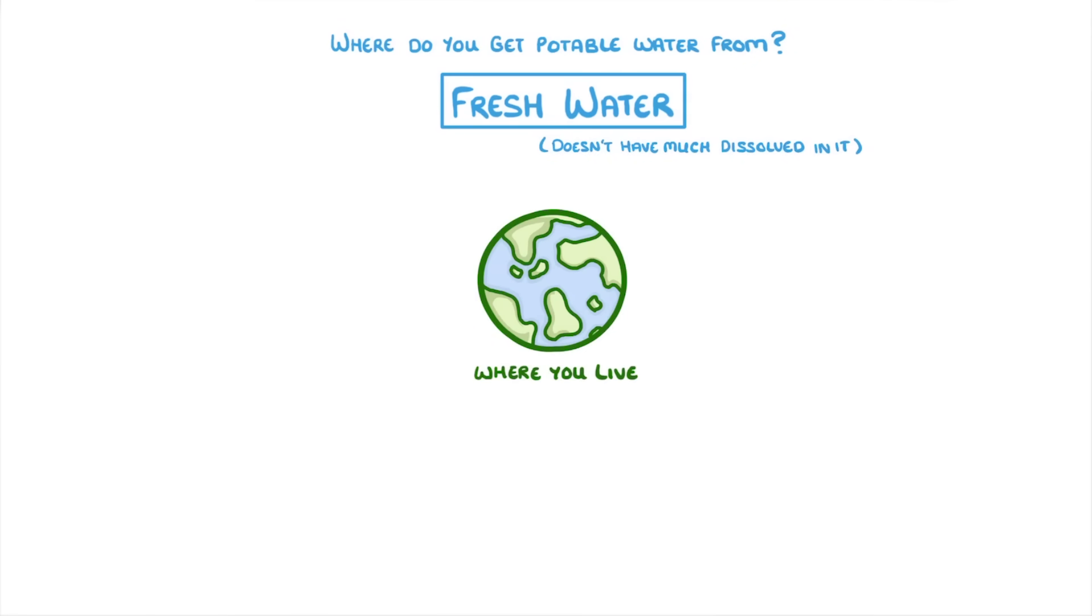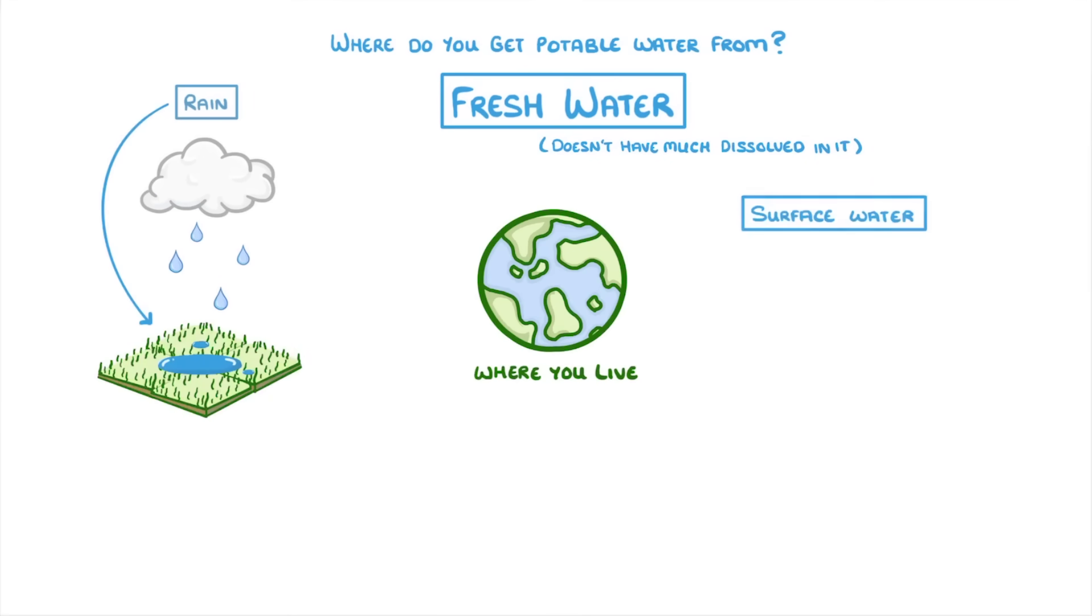For example, in the UK we get a fair bit of rain, which is a type of fresh water. Once it's hit the ground it generally collects as either surface water or groundwater. Surface water sources are things like lakes, rivers, and reservoirs - literally bodies of water that are exposed at their surface.